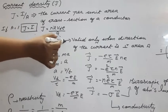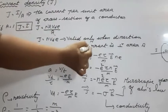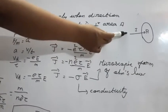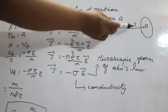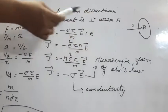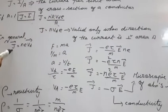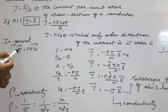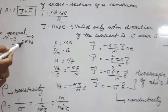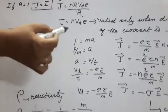This formula J = n·e·v_d is valid only when the direction of the current is perpendicular to the area A. In general, when specified in vector form, the current density is J⃗ = n·e · v⃗_d.